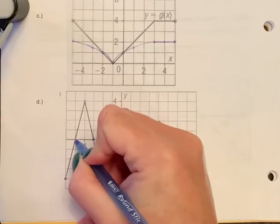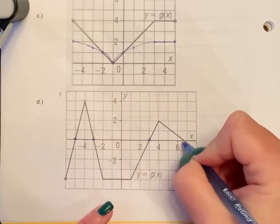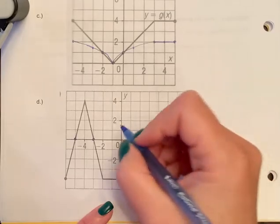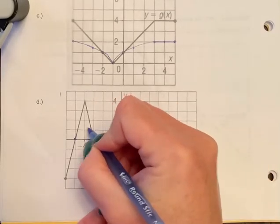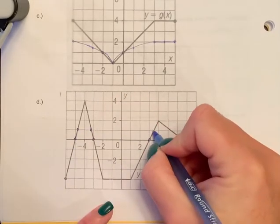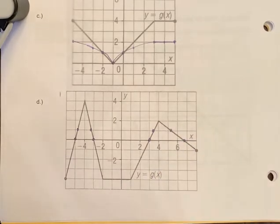So our invariant points of x-intercepts or zeros are here, so I just go along the x-intercepts. Then I go along where y equals 1, and I plot those points. So that's those points there.